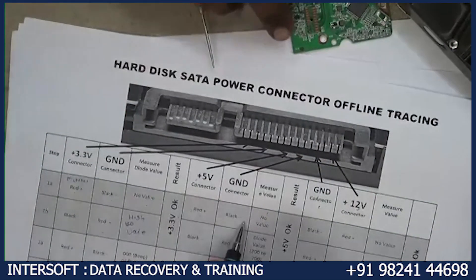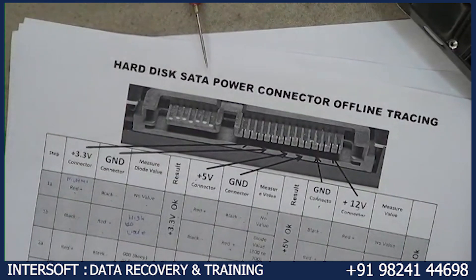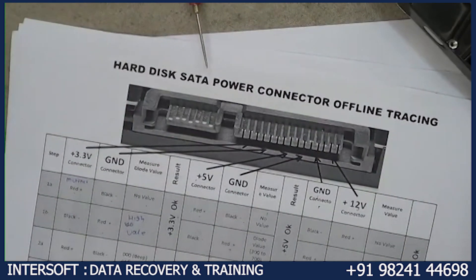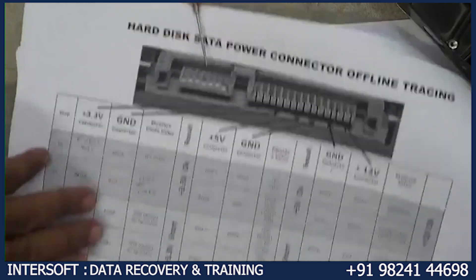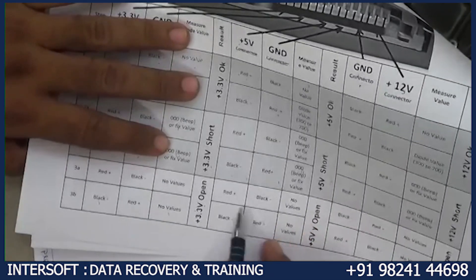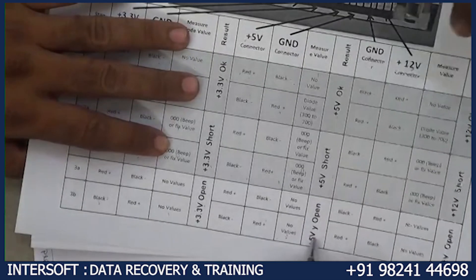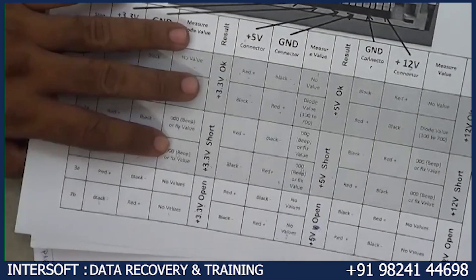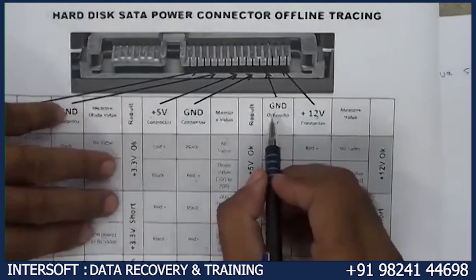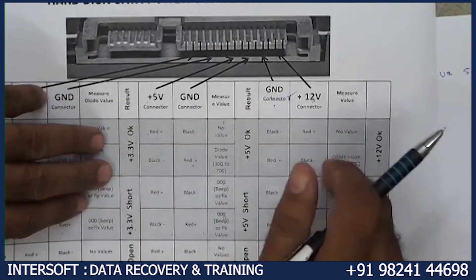5V: red plus — no value, diode value — then it is okay. If both sides give value and beep, that means 5V is short. If both sides give no value, that means 5V is open. Same concept for ground connector. Same option for all three voltages.